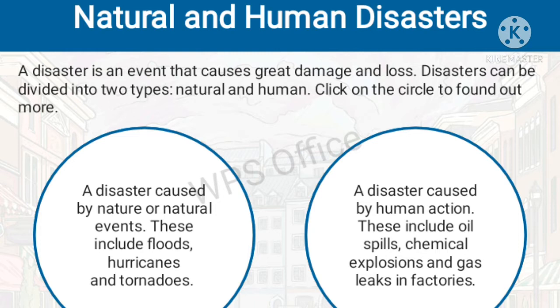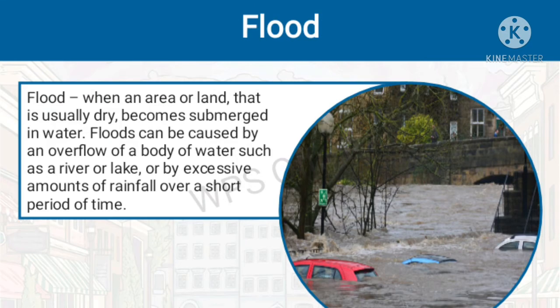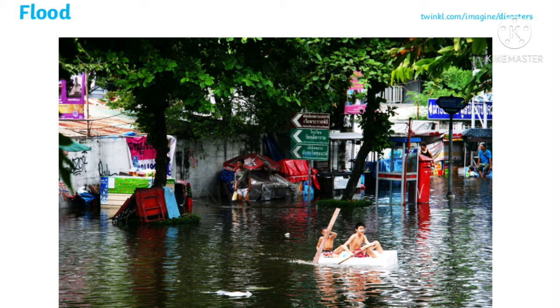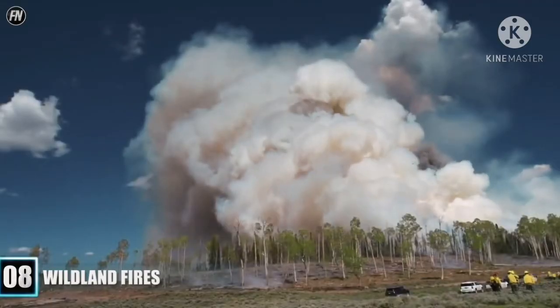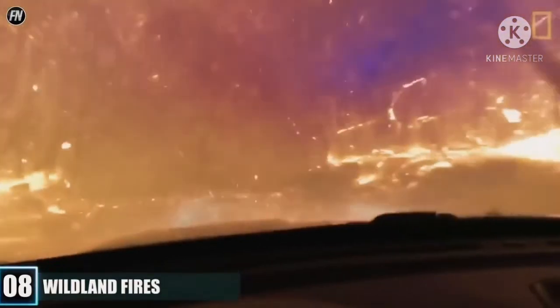Natural disasters include hurricanes, tornadoes, and earthquakes. But disasters caused by human action include oil spills and gas. Now let's look at flood. The image before you is that of a flooded environment. Flood is when an area of land that is usually dry is being overflowed with water. So, flood is a natural disaster.